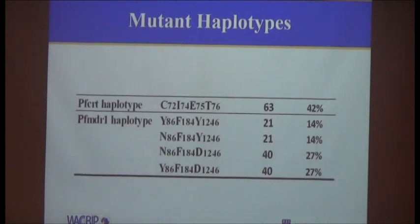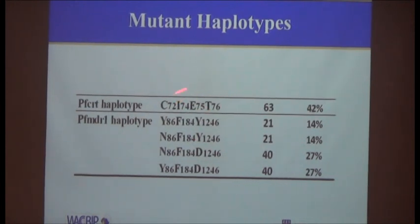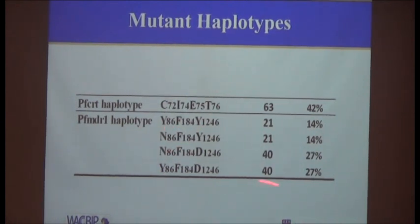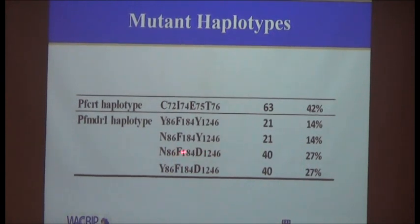These are the unique haplotypes found for PFCRT. The CVIET haplotype is reported to be common in Africa. We also found these haplotypes for PFMDR1, and NFPD is what is found in Africa.